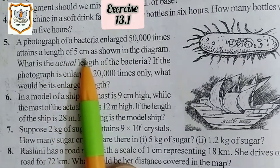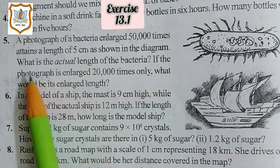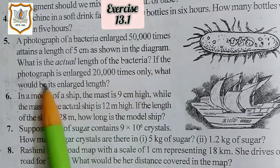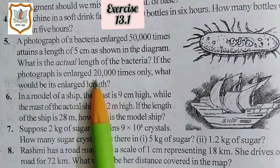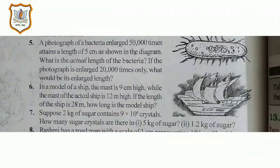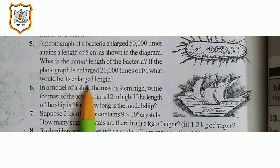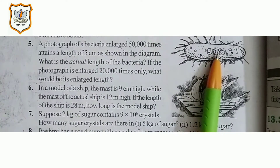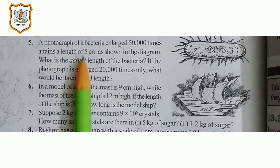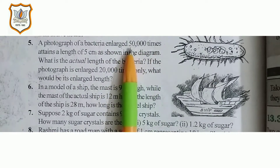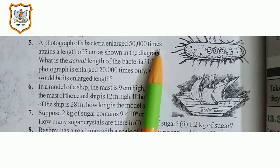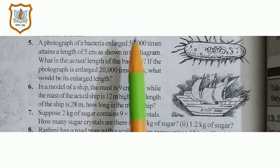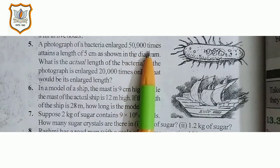What is the actual length of the bacteria? If the photograph is enlarged 20,000 times only, what would be its enlarged length? In this problem, we are given that if we see this picture 50,000 times enlarged — 'enlarged' means zoom under a microscope — and we see this picture 50,000 times.